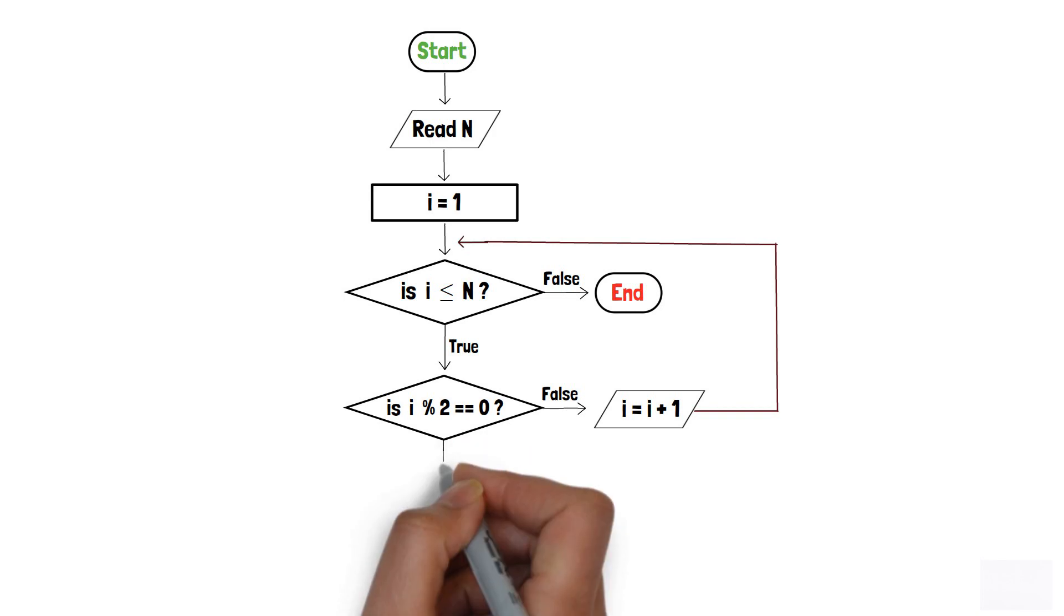And if i modulo 2 equals to 0, it means i is even. So, we will print it using an output component.